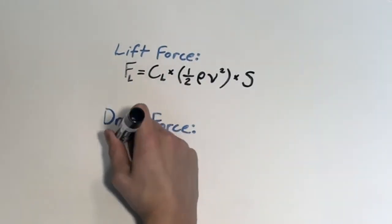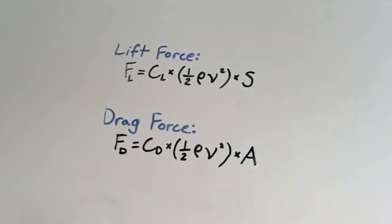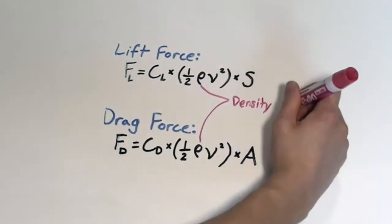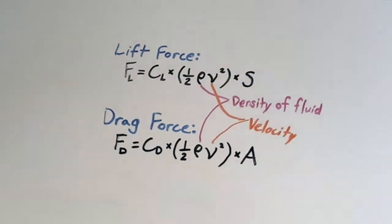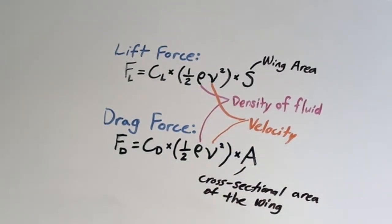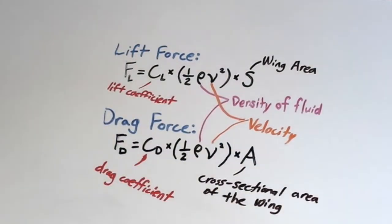In these equations, FL is the lift force, FD is the drag force, rho is the density of the fluid, V is the velocity, S is the wing area, the area of the wing as seen from above, A is the cross-sectional area of the wing, CL is the lift coefficient, and CD is the drag coefficient.